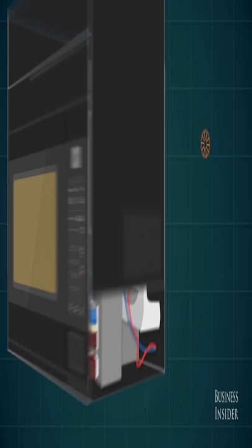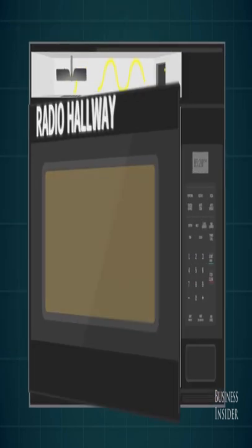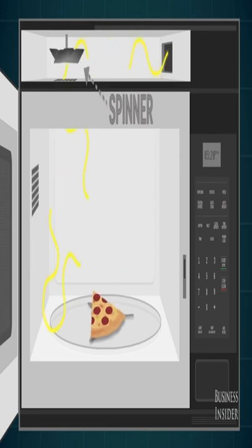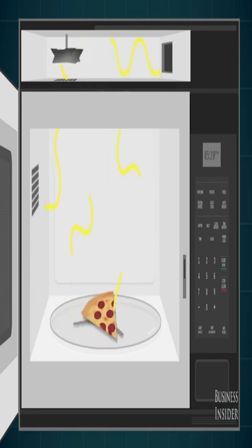The radio waves then move down the radio hallway and into the food box. The metal spinner changes the shape of the radio waves, so the warm spots, where the waves are strong, move around a little.